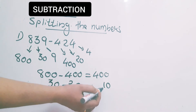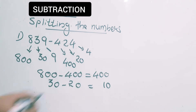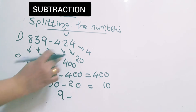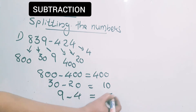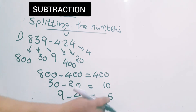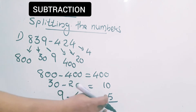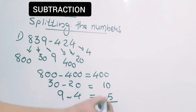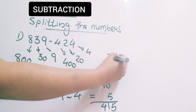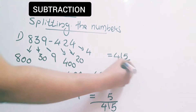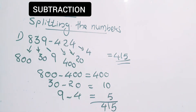Write 10 starting from the tens place. Now ones: that means 9 minus 4. 9 minus 4 is equal to 5, write that in the ones place. Now join these numbers — the last step is not minus, remember. The last step is that we have to add. So when we add we get 5, then 1, then 4 — that means 415. We got the answer 415. This is called subtraction by splitting the numbers.